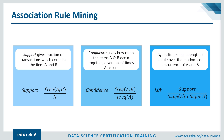Lift indicates the strength of a rule. The denominator of the lift formula calculates the independent support of item A and item B — the probability of A and B occurring independent of each other. There's a big difference between A and B randomly occurring together versus actually having an association. If the denominator of the lift is higher than the numerator, A and B are randomly co-occurring with no real association. If the lift value is high, you can prioritize that rule — a lift of 4 means if you buy item A, you're four times more likely to buy item B.